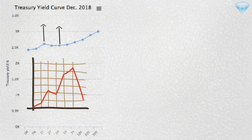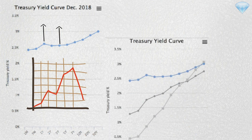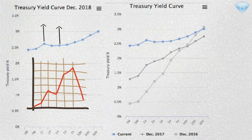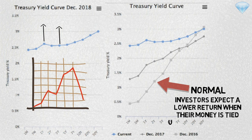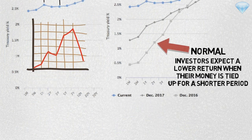In a normal yield curve, the shorter-term bill yields less than the long-term bonds. Investors expect a lower return when their money is tied up for a shorter period of time, compared to a higher return when their money is tied up for a longer period of time.